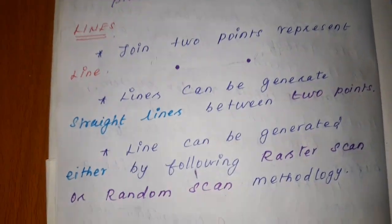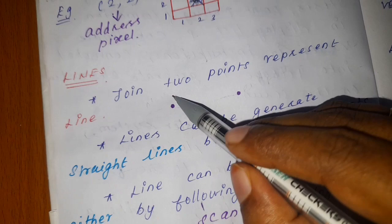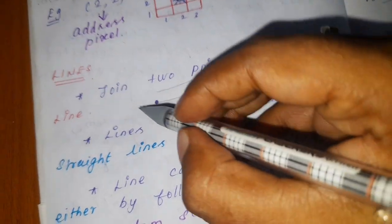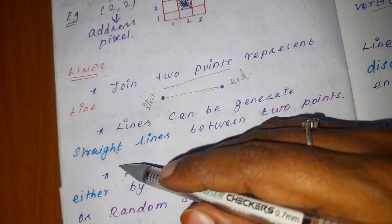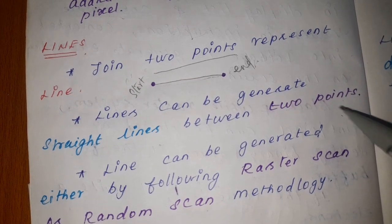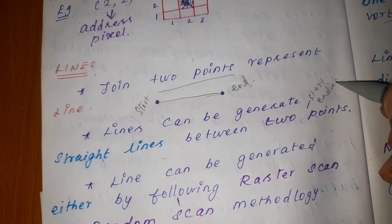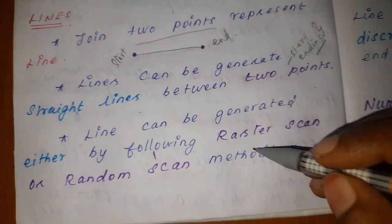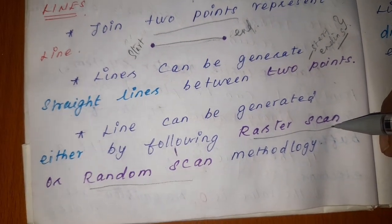The next output primitive is a line. A line is nothing but the joining of two points. Joining two points forms a line, with a start point and an end point. A line is generated as a straight line between two points. A line can be generated using either raster scan or random scan methods.